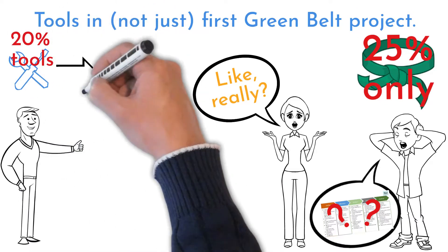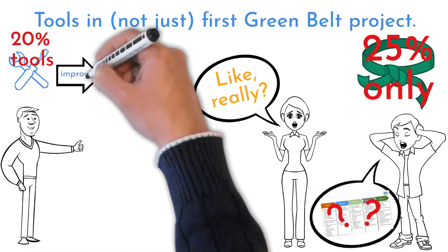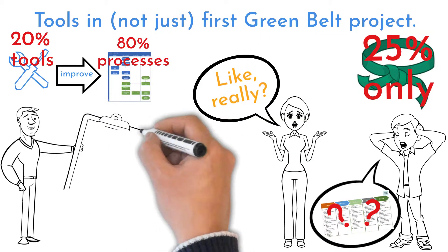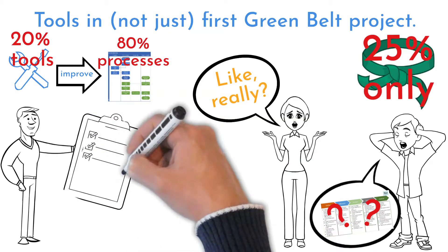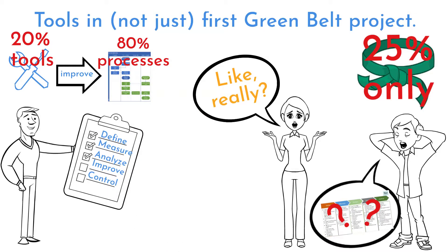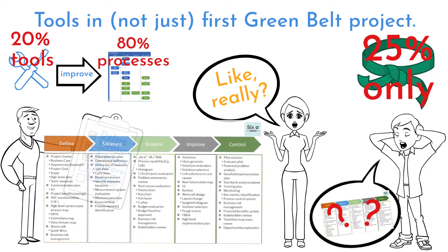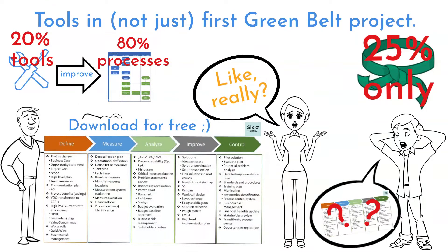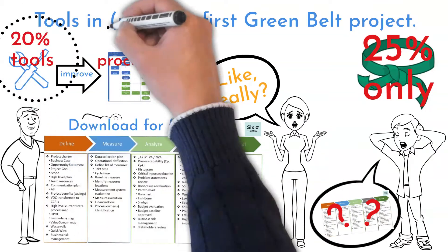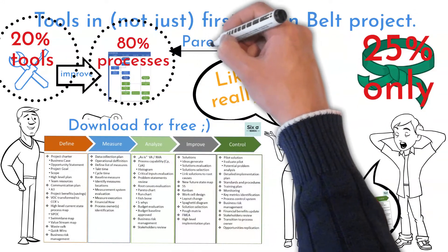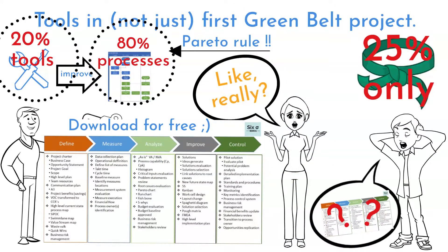You can improve 80% of problems by using just 20% of the tools. Yes, this is true. There is a list of tools you can follow and definitely improve your process, but as I've mentioned in previous videos, no need to use them all. This DMAIC tool list is available to download under the video. And this is a great example of Pareto distribution, which is one of the tools to be used at the start.